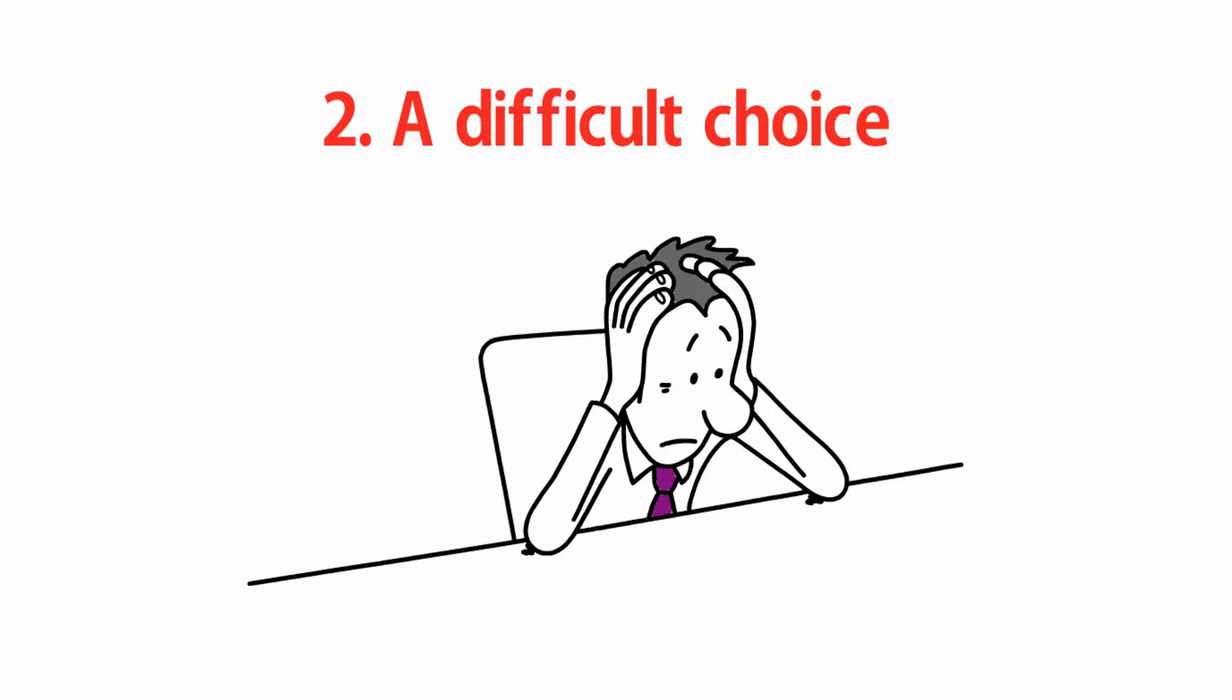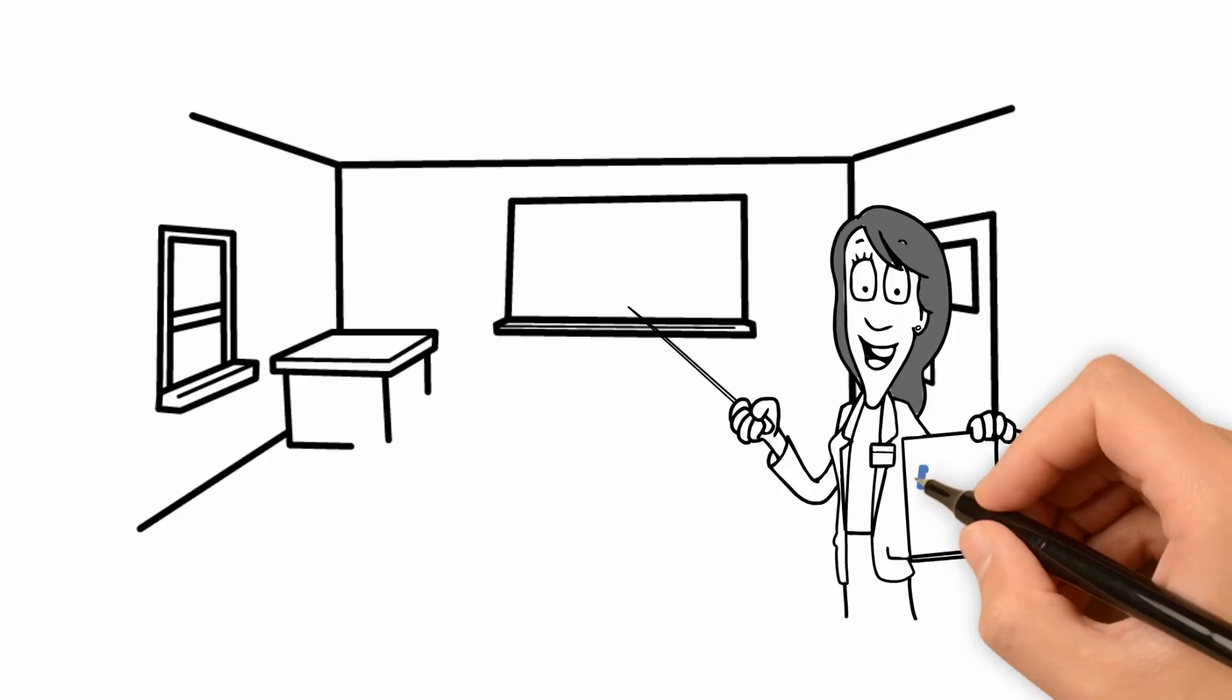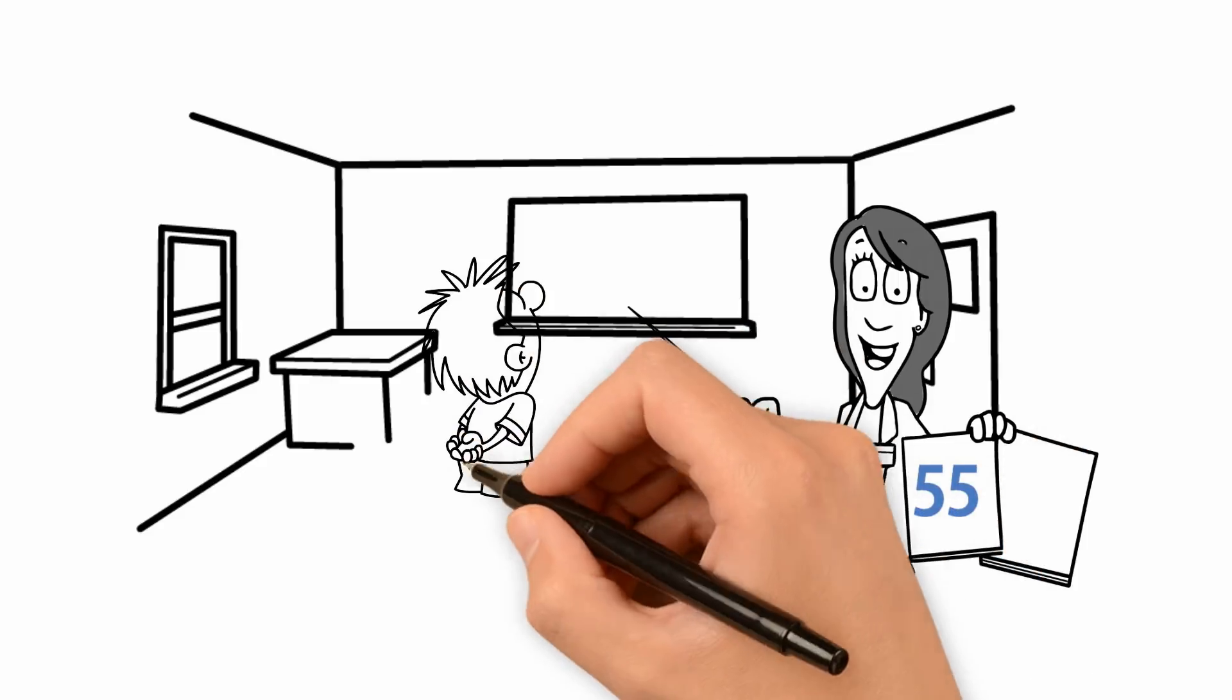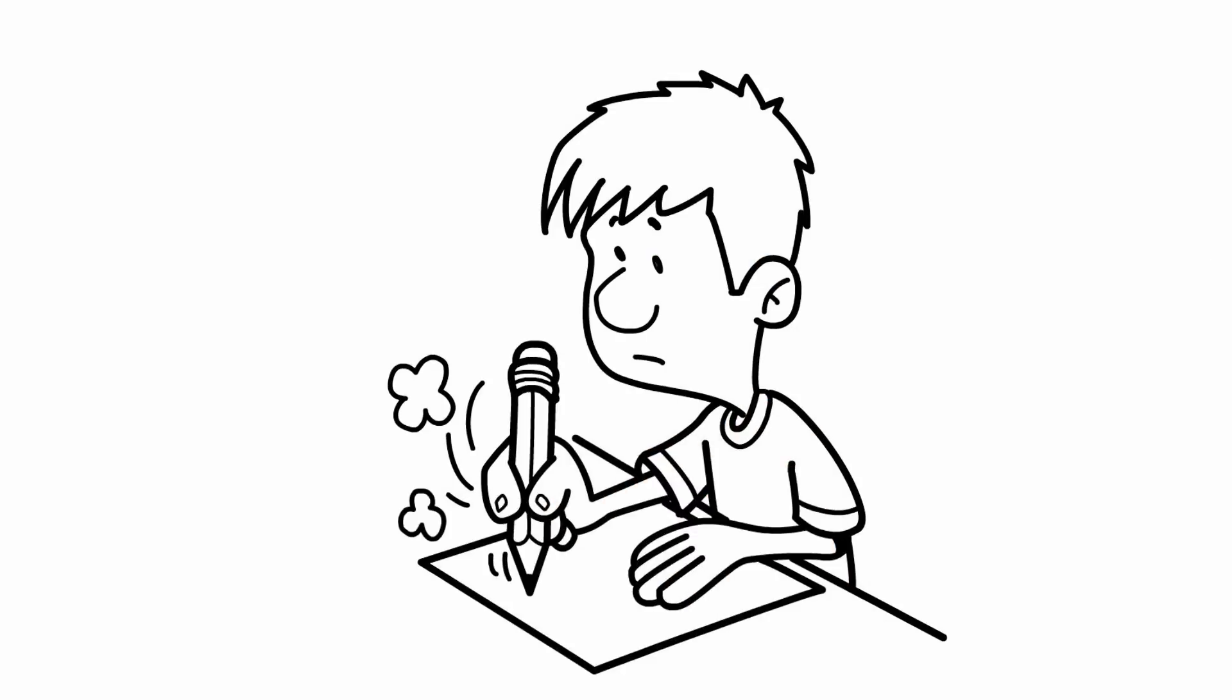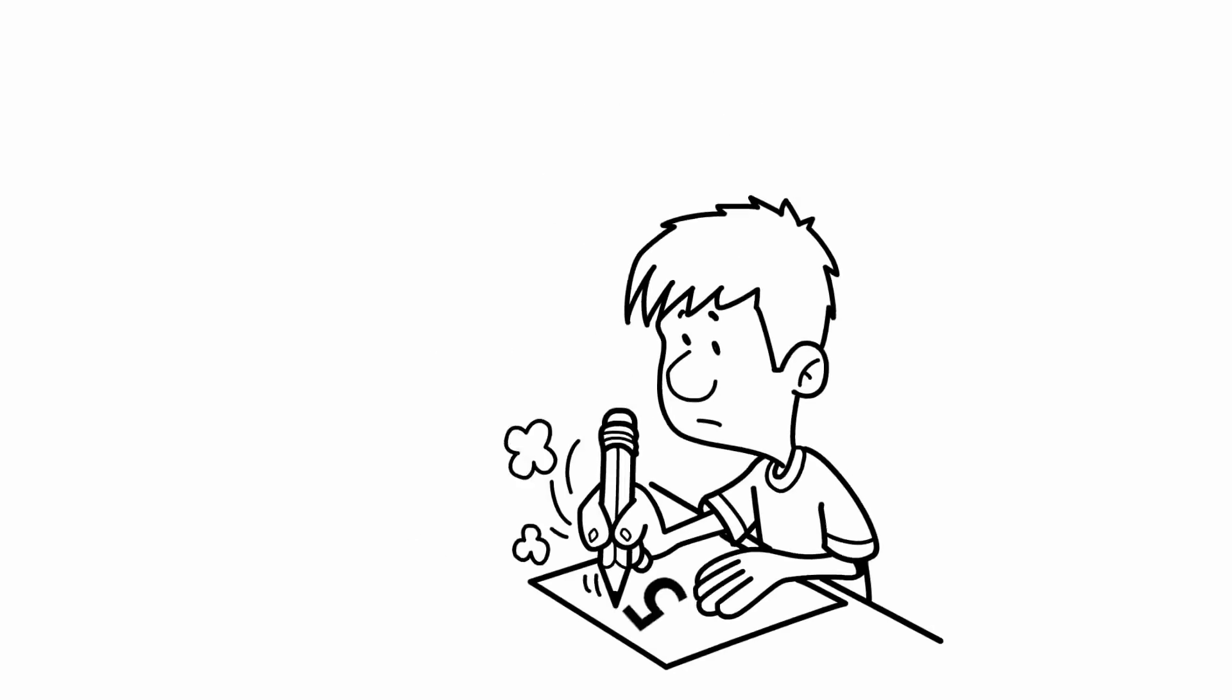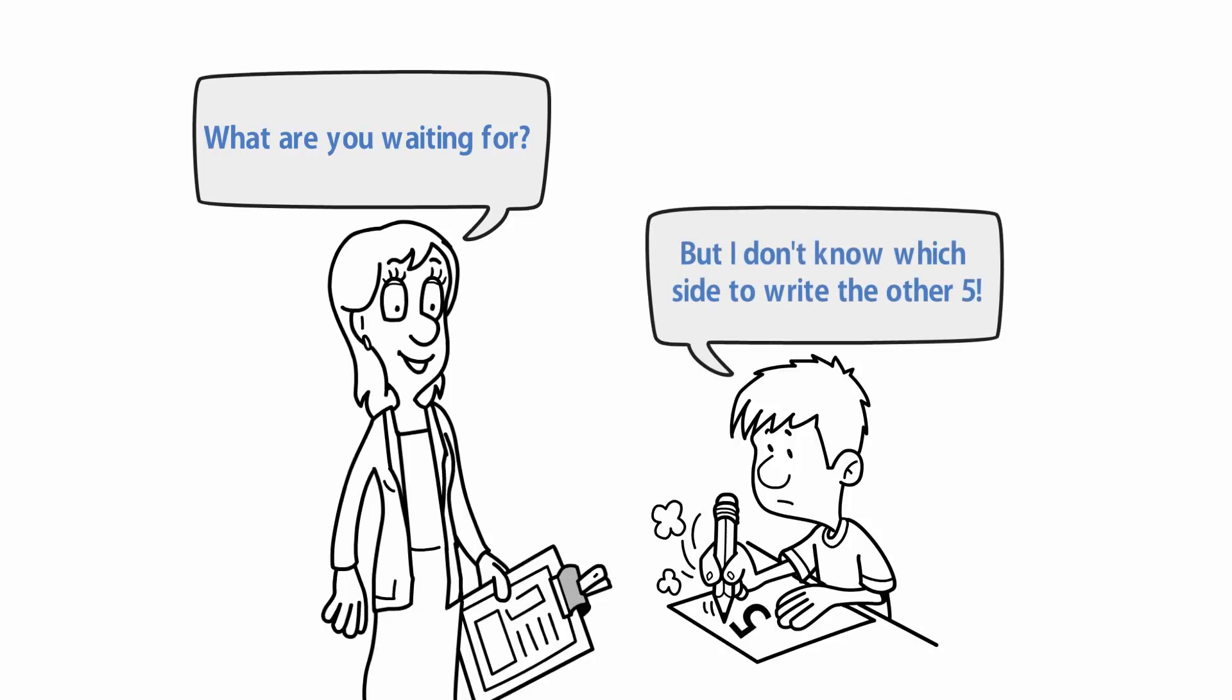Story 2: A Difficult Choice. A teacher asked one of the students to write the number 55. The student asked, "how do I write that number?" To his question, the teacher said, "it's simple. Write five and another five next to it." The student wrote the first five then stopped. The teacher asked him, "what are you waiting for?" The student replied, "but I don't know which side to write the other five."